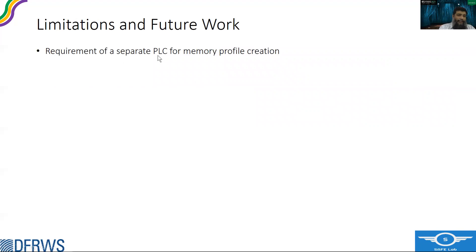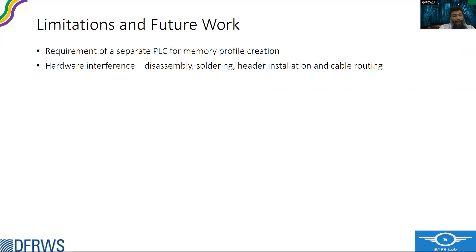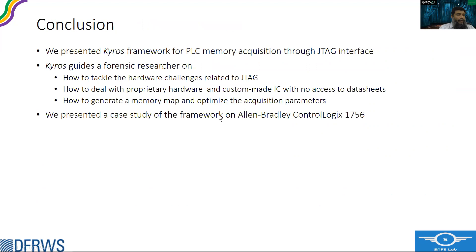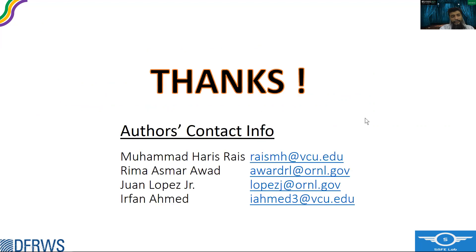Limitations include the need for a separate test PLC for profile creation, since we cannot risk using the suspect PLC. Hardware-based acquisition requires hardware interference: disassembly, soldering, header installation, etc. And if the vendor has disabled the JTAG interface, this approach cannot work. In future work, we plan to employ and evaluate the Kairos framework on other PLCs as well. To conclude, we presented Kairos, a hardware-based memory acquisition framework for PLCs that guides forensic researchers on tackling hardware challenges related to JTAG, dealing with proprietary hardware and custom ICs without data sheets, generating a memory map, and optimizing acquisition parameters — demonstrated through a case study on the Allen-Bradley ControlLogix 1756.